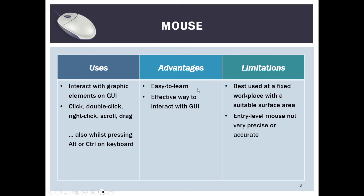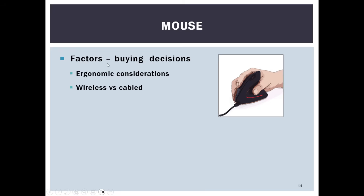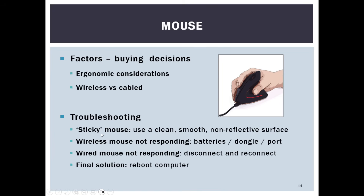For the mouse, limitations include that it's best used at a fixed workplace with a suitable surface area and at entry level it's not that precise or accurate. When buying, consider ergonomic design and whether you want it wired or wireless. For troubleshooting: ensure a clean, smooth, non-reflective surface. If wireless doesn't respond, check batteries, dongle, and port. For a wired mouse, disconnect and reconnect, try a different port, or reboot the PC.